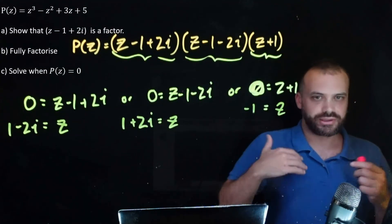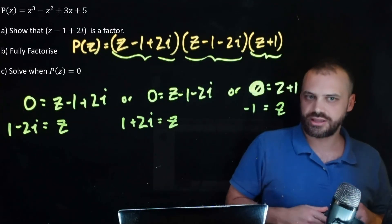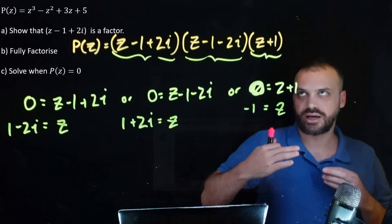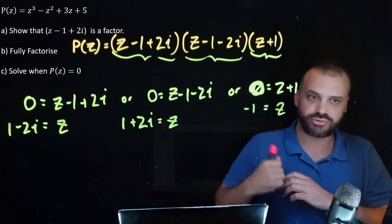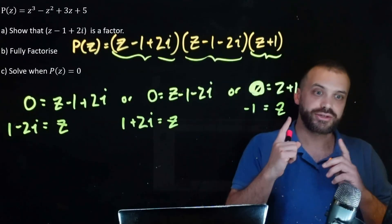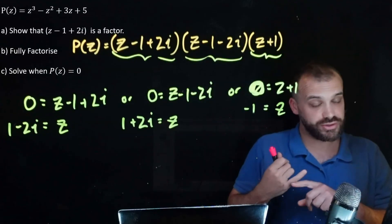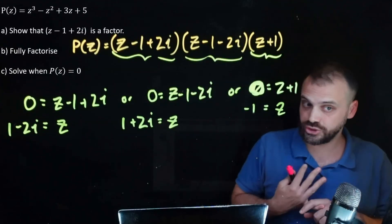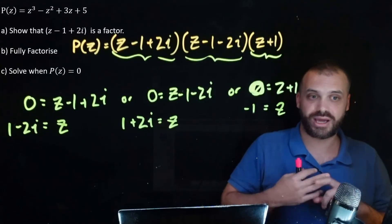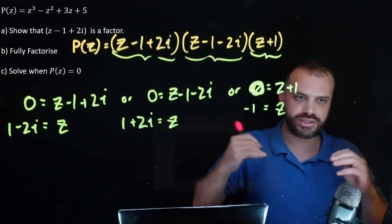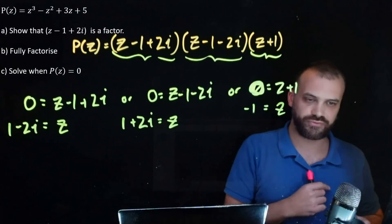That is factorizing a cubic using the factor theorem, the conjugate root theorem, and equating coefficients.